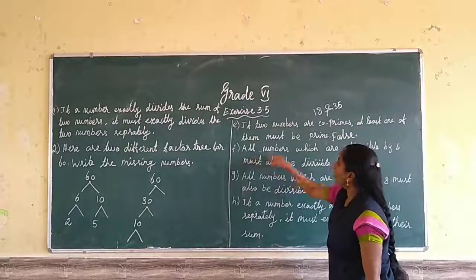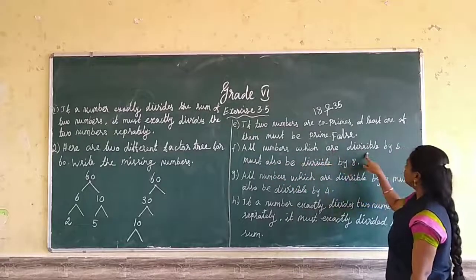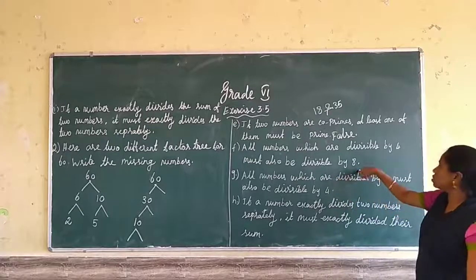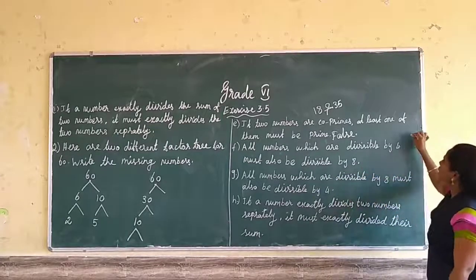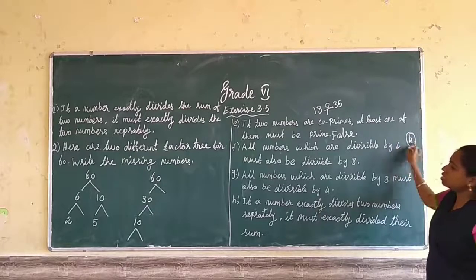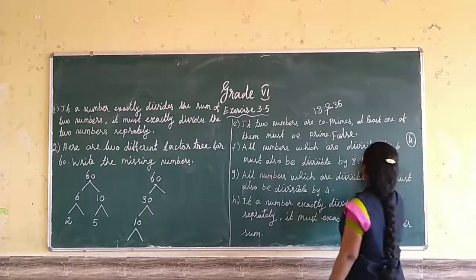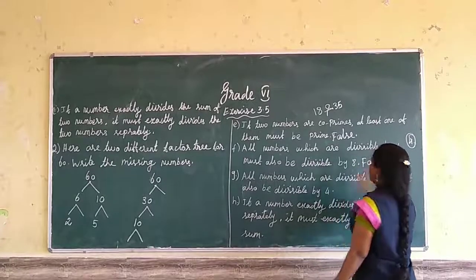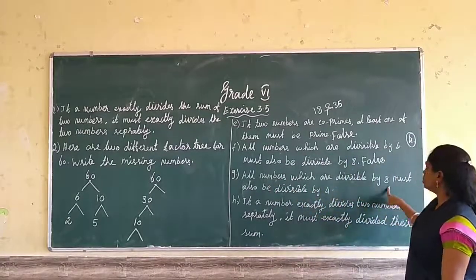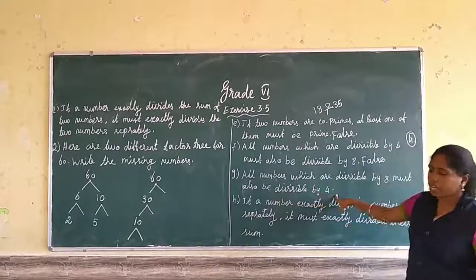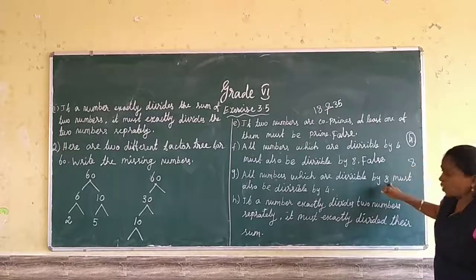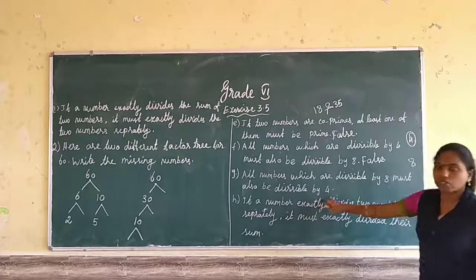Next statement: all numbers which are divisible by 4 must also be divisible by 8. This is false. Take the number 4 — it is divisible by 4 but not divisible by 8. Next statement: all numbers which are divisible by 8 must also be divisible by 4. For that, take the number 8 — it is divisible by 8 and also divisible by 4. So this is true.